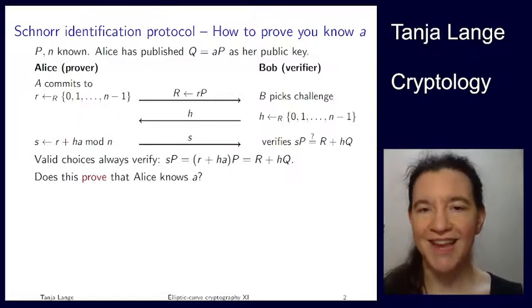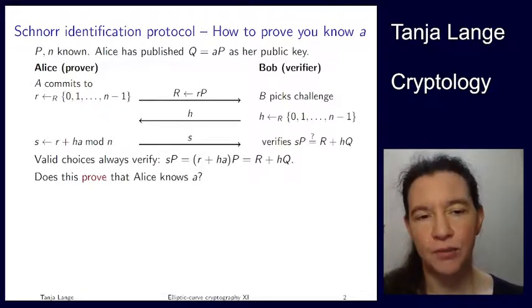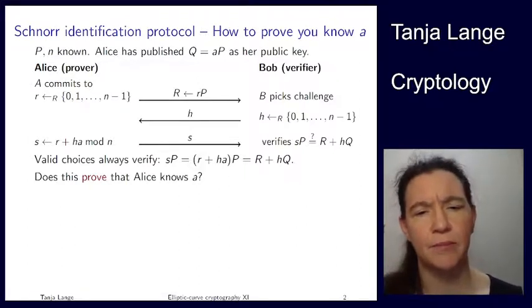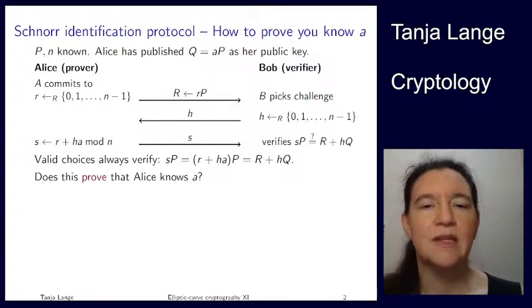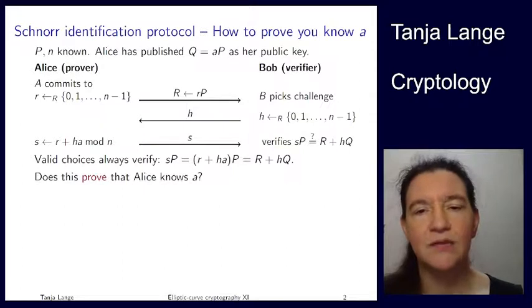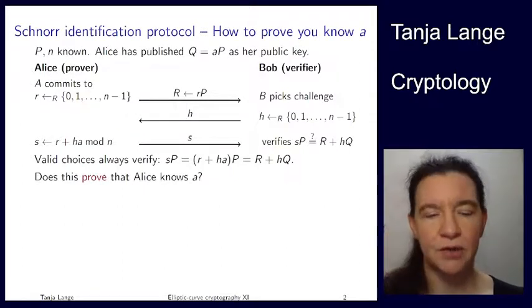Alice can prove that she knows A — she can survive these steps if she knows A. But does it prove that she does know A? The way it's written, yes. But it is very important to understand where this hinges on.